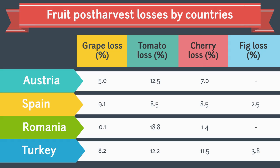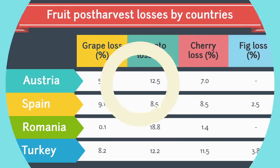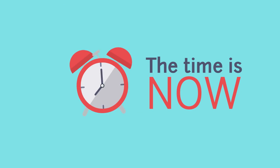Finally, the main reason for low post-harvest losses in figs both in Turkey and Spain is that products damaged during the harvesting are then sold as dried fruit. As a conclusion, the prevention of post-harvest losses is an issue that needs to be urgently solved for both developed and developing countries.